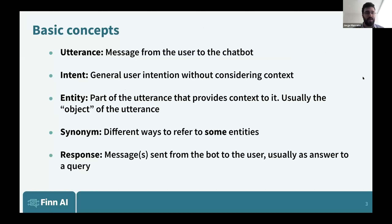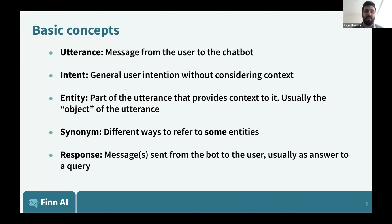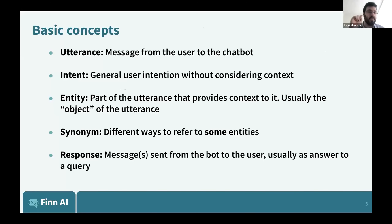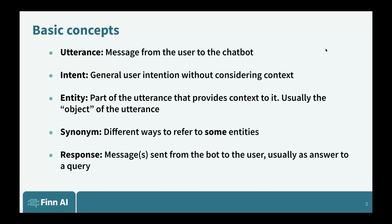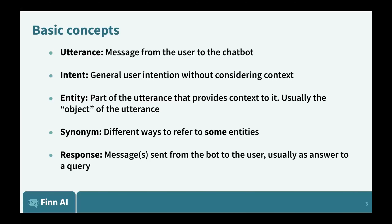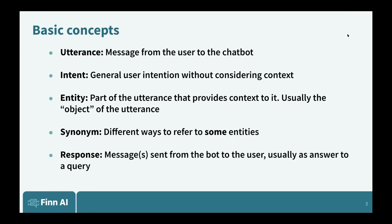For some basic concepts, in case someone might not be familiar or is planning on implementing their own chatbot: an utterance is a message from the user to the chatbot — it can be the person actually typing, a button click, or something that in the background is sending an utterance to the bot. The intent is the general user intention without considering context. For example, if a person says 'what are the fees for my credit card,' the intent would be fees information. The credit card would be considered an entity — the contextual part of the utterance.